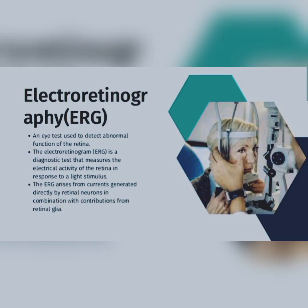So, Electroretinography — what is it? It is an eye test that is used to detect abnormal function of the retina. It is a diagnostic test that measures the electrical activity of the retina in response to a light stimulus. The ERG arises from currents generated directly by retinal neurons in combination with contributions from retinal glia. When a person looks at a bright object, suddenly the normal response is to close the eyelids. Depending on the intensity of light, if there is a variation in it, then we have to study it — so this study is Electroretinography.